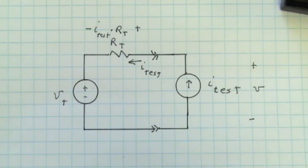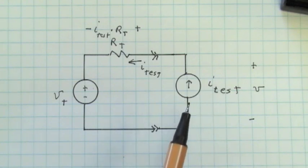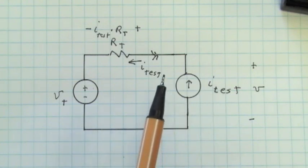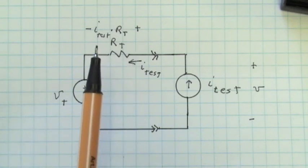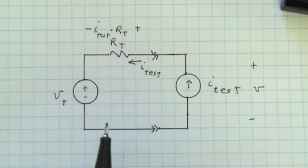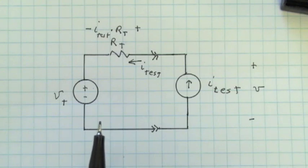Suppose one applies a test current source. So here's an independent current source of value I test to the terminals of a Thevenin equivalent. I test will flow through R sub T. There will be a voltage I test times R sub T across. So by Kirchhoff's voltage law going around the loop, minus V sub T minus I test times R sub T plus V is equal to zero.